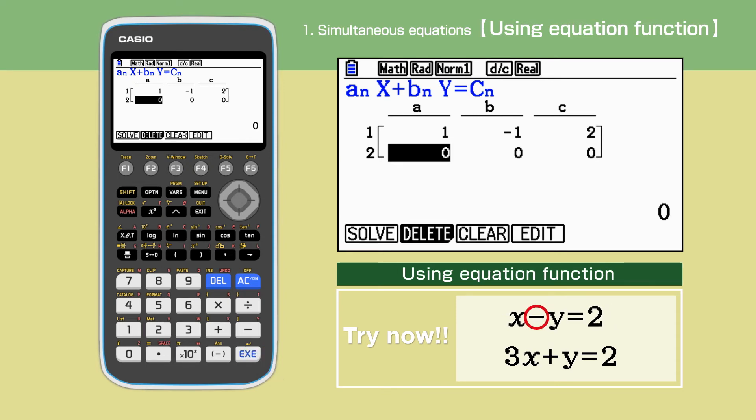If a coefficient is negative, we need to make sure to use the bracket minus and not the subtraction minus. Repeat the same process for the second equation.